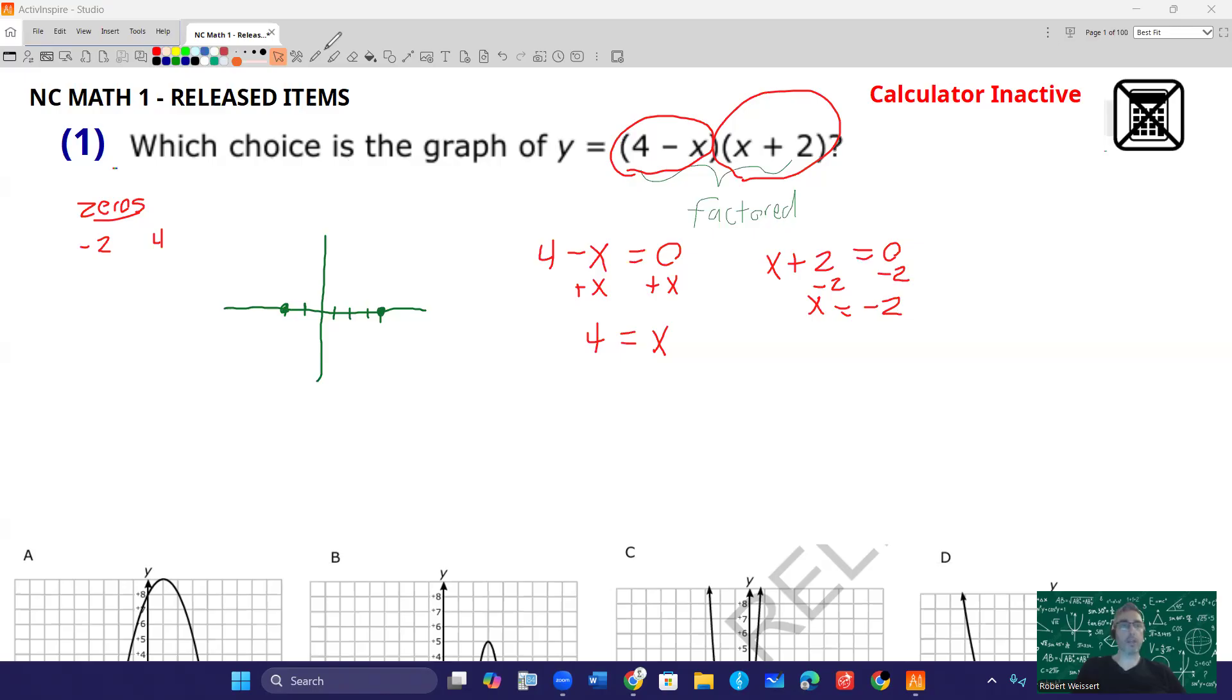Now it could do it a couple of different ways. It could open upwards like this or it could open downwards. But the key idea for this question is we need to recognize that it has zeros at negative 2 and positive 4 and from the graphs alone you should be able to decipher which one of those it is.